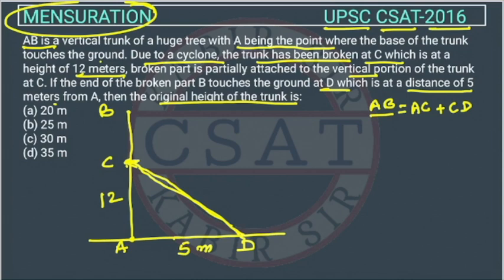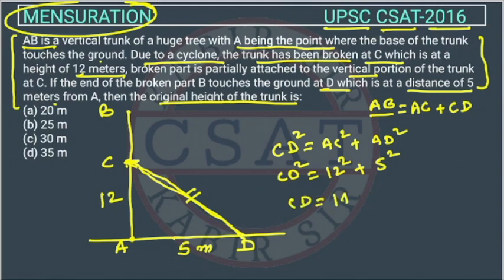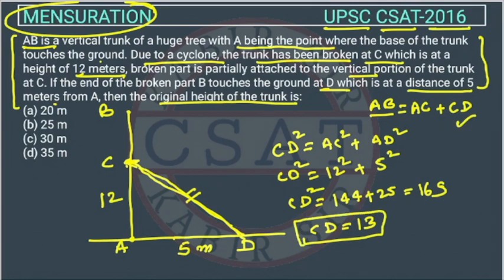The language is tough but we use the Pythagorean theorem. CD² = AC² + AD², so CD² = 12² + 5² = 144 + 25 = 169. Therefore CD = 13 meters.